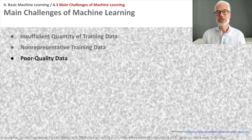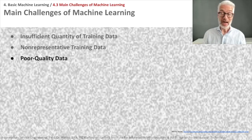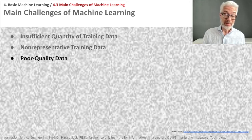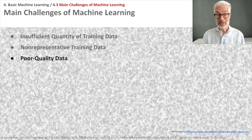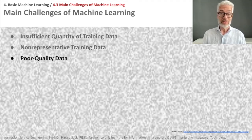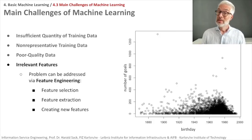There can also be noise, errors, and outliers in your training data that are not really representative. You always have to watch data quality. From poor quality data you cannot expect first-class results. So, next to insufficient quantity and non-representative training data, poor data quality is also an important issue.